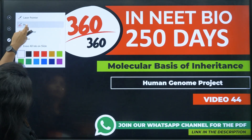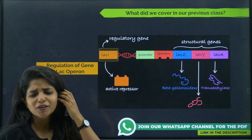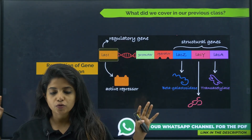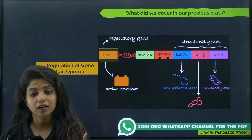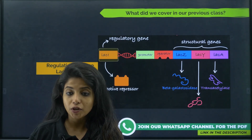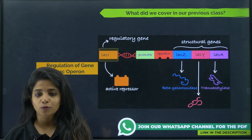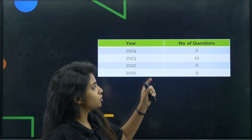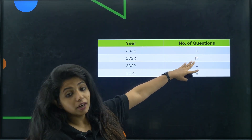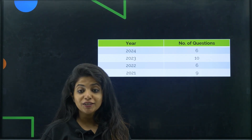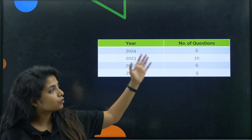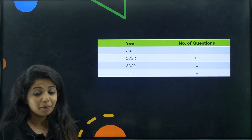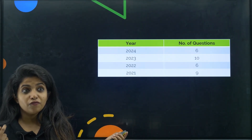In our previous session, we spoke about the regulation of gene expression and the lac operon. This chapter has held around 6 to 10 questions in previous years, so this year could give you more questions too — 6 questions into 4 marks each is 24 marks, and 10 questions is 40 marks. Each single mark is very important. You can also join our WhatsApp channel for practice.